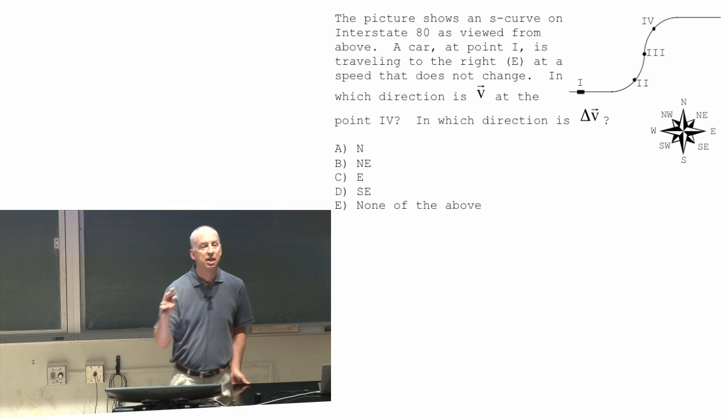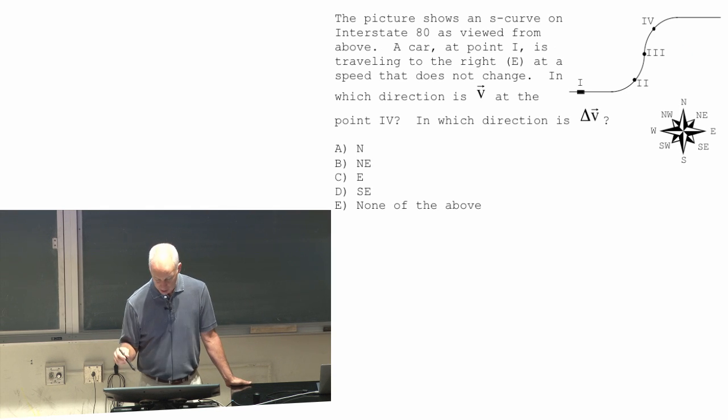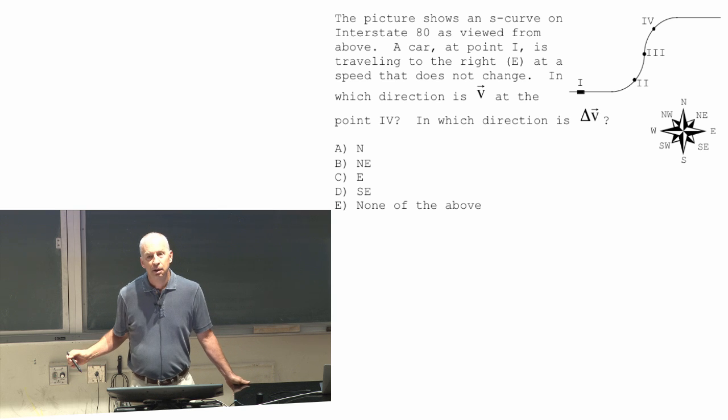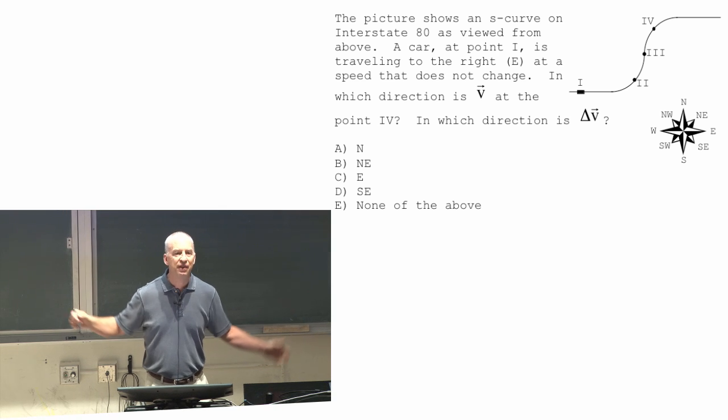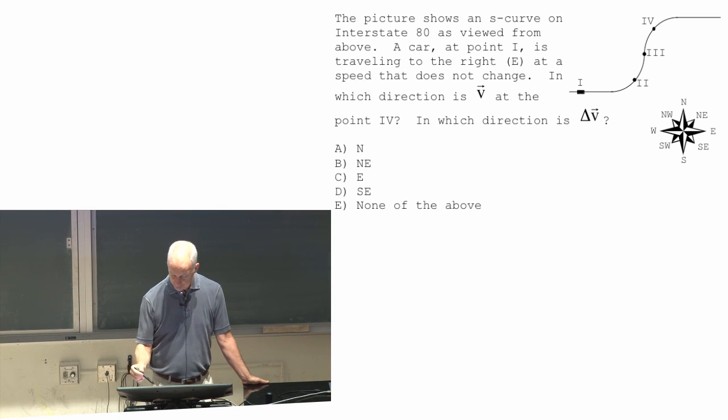So this is actually two questions. And I want to do the first one first. And we'll just do that quickly. So here's a picture from above of a section of Interstate 80. There's a car right here at point one. It's headed east at a constant speed, so the driver looks at the speedometer, it's the same number all the time.